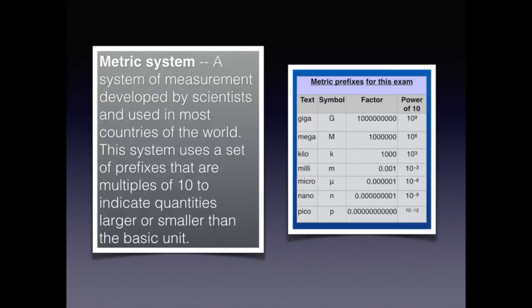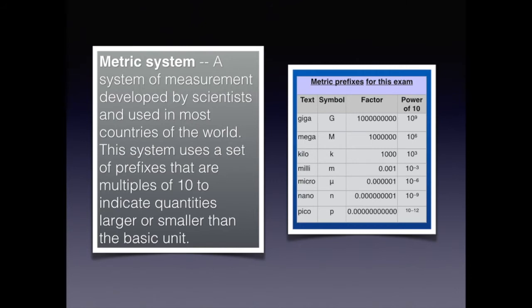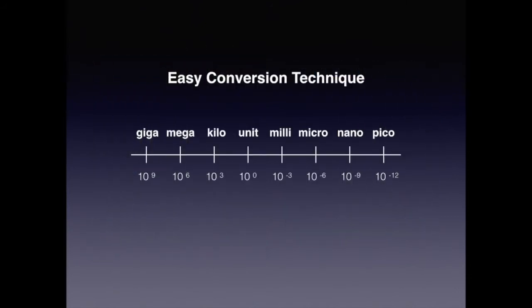So what is the metric system? It's just a way of measuring units of length, temperatures, or various other entities. It was developed by scientists and is used by most countries in the world. It's a simple system that is in multiples of 10 rather than in fractions. When it comes to the technician license exam, you really only need to concern yourself with the units listed: giga, mega, kilo, the unit itself like a volt or an amp, and then milli, micro, nano, or pico.